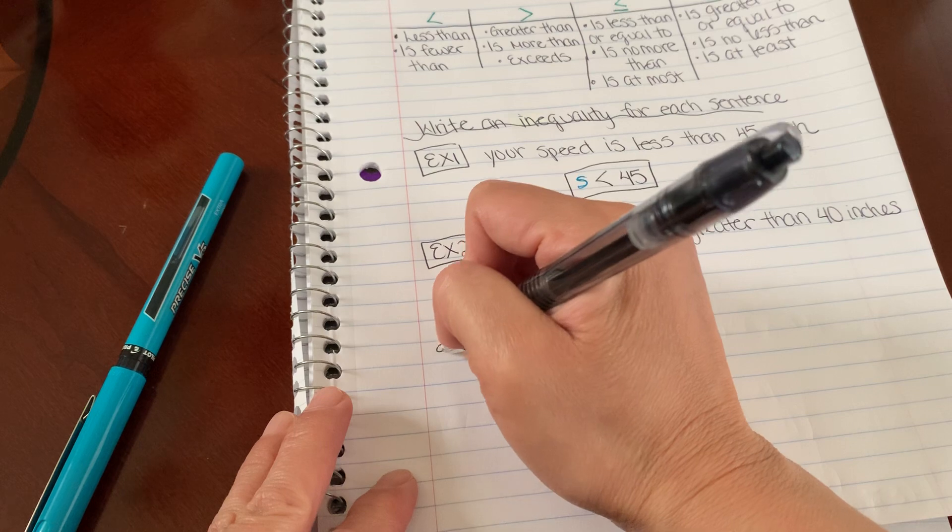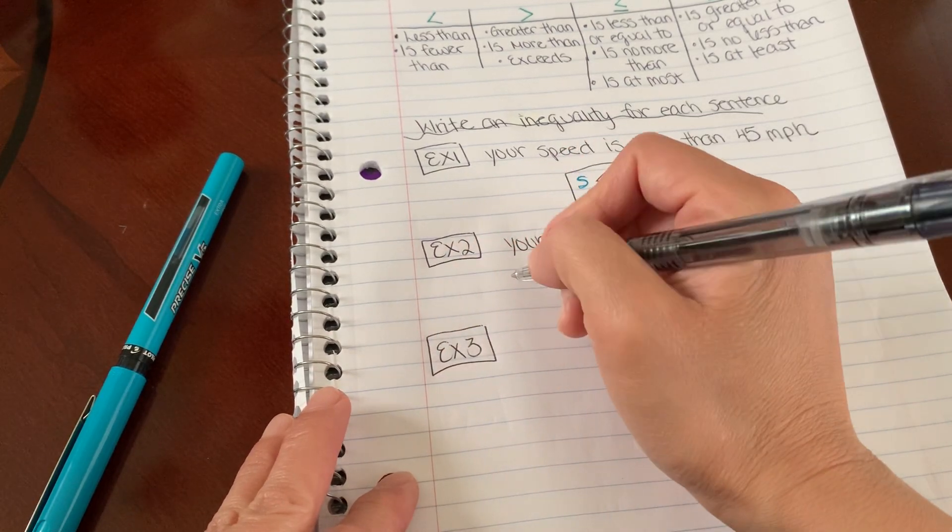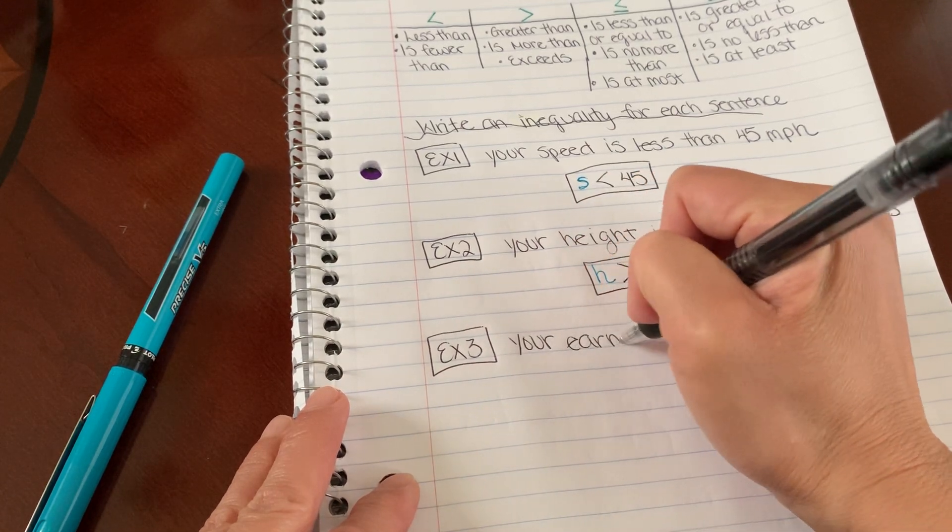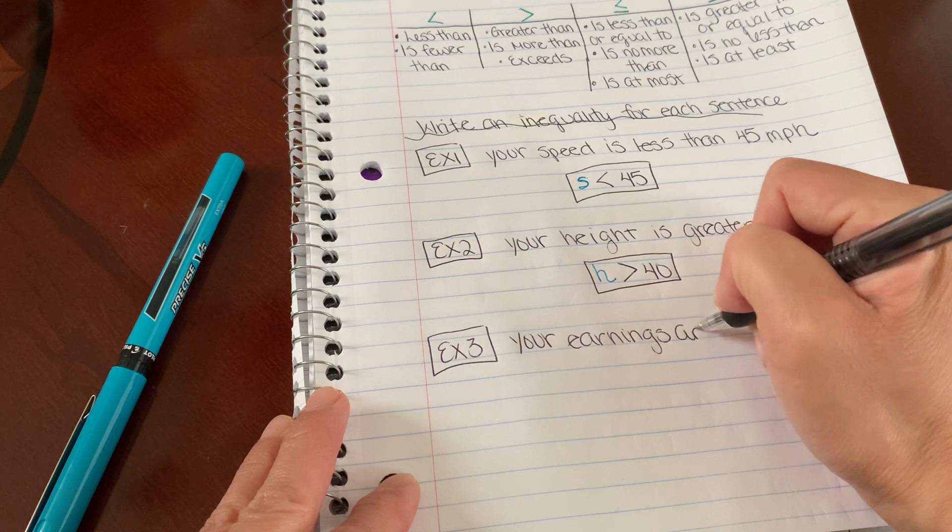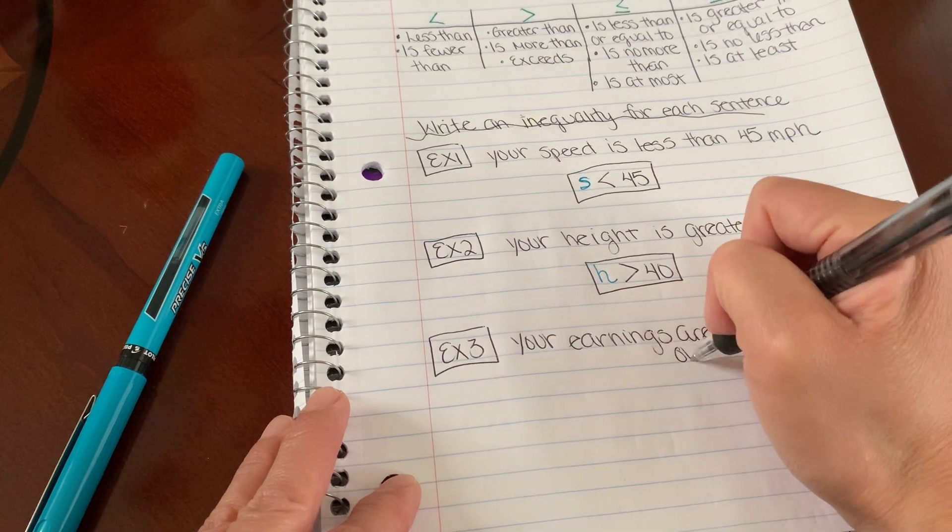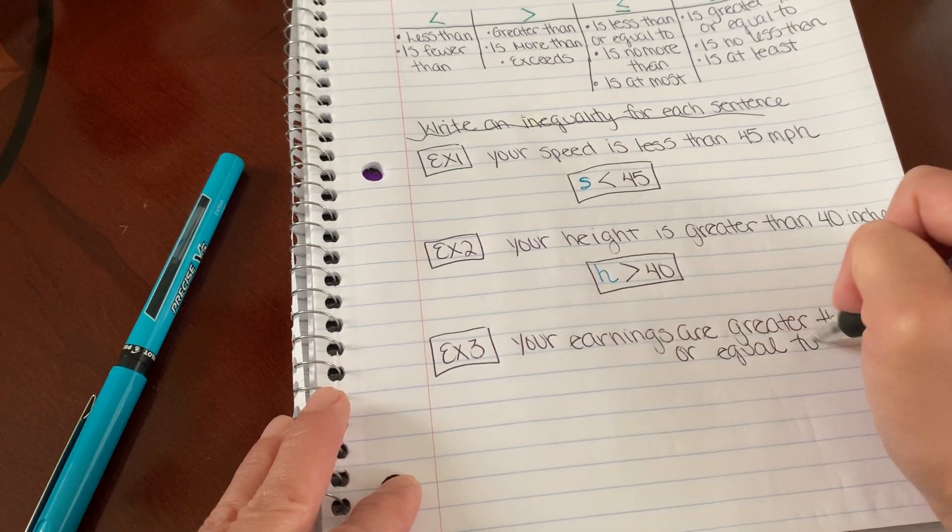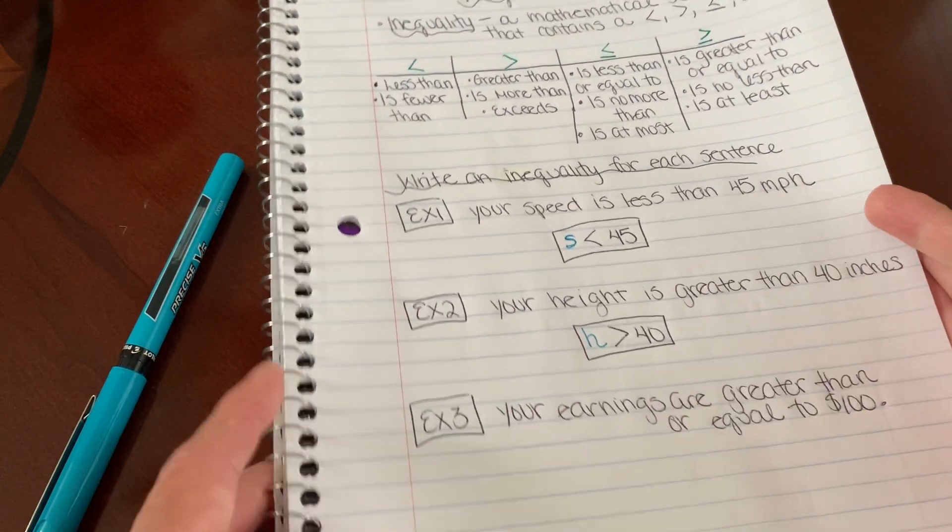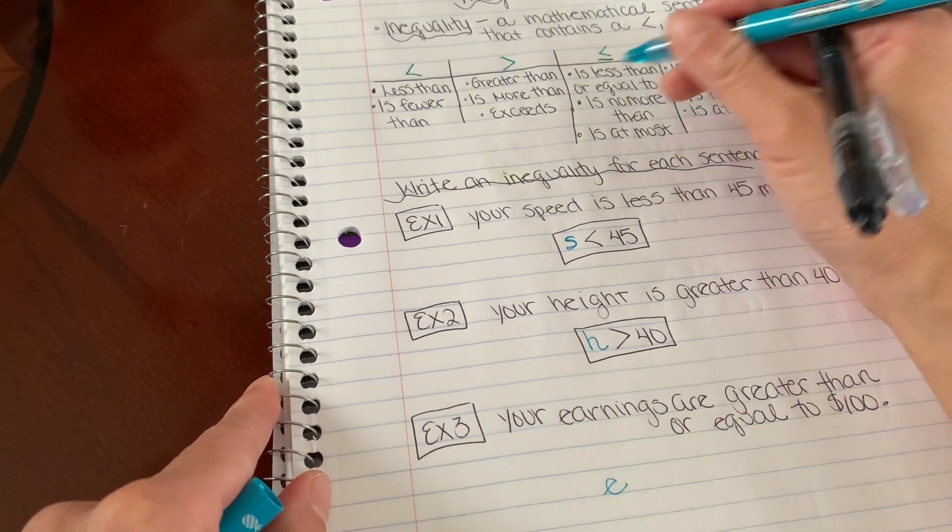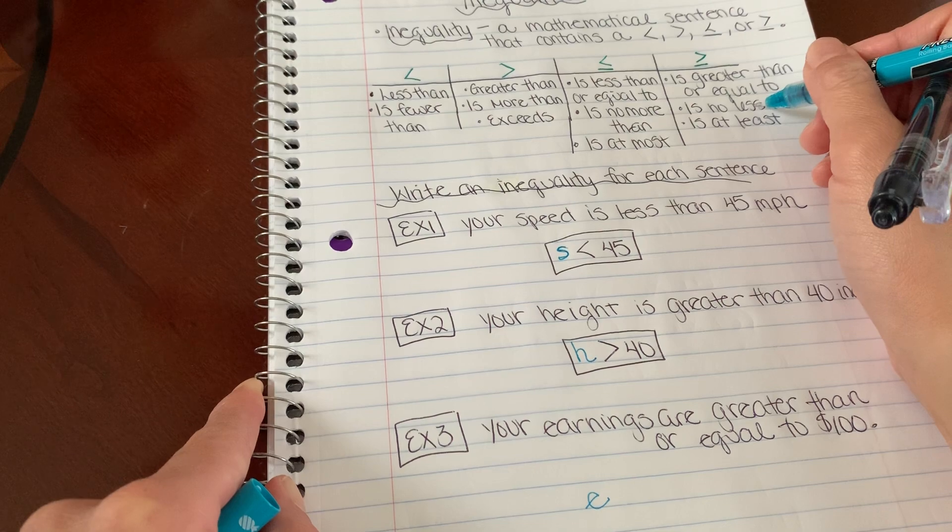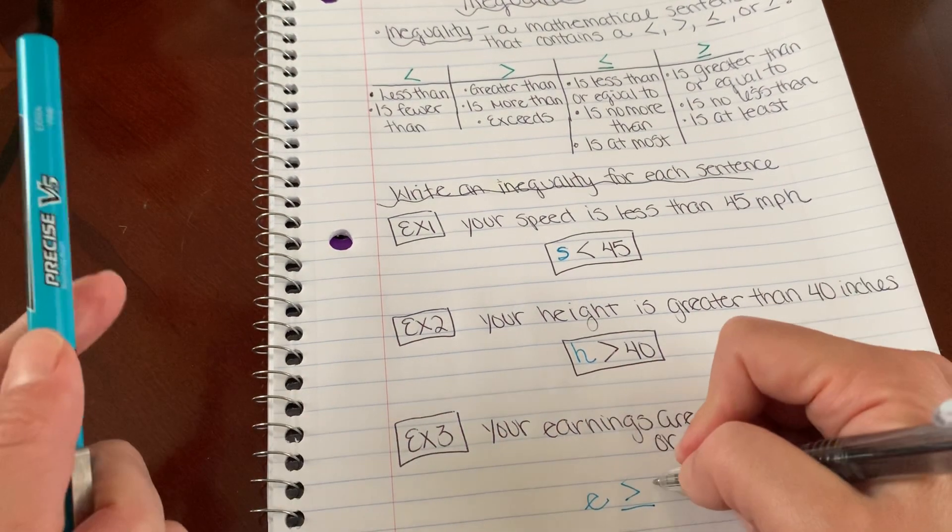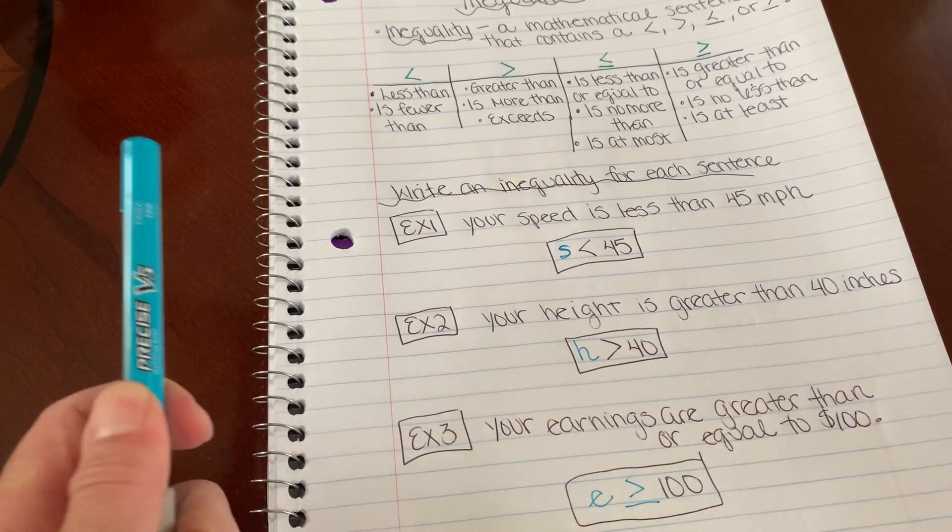Example three. We'll do one more. Your earnings are greater than or equal to $100. So I'm going to pick variable E for earnings. Greater than or equal to. So this one's less than or equal to, and this one is greater than or equal to. So greater than or equal to $100. Perfect.